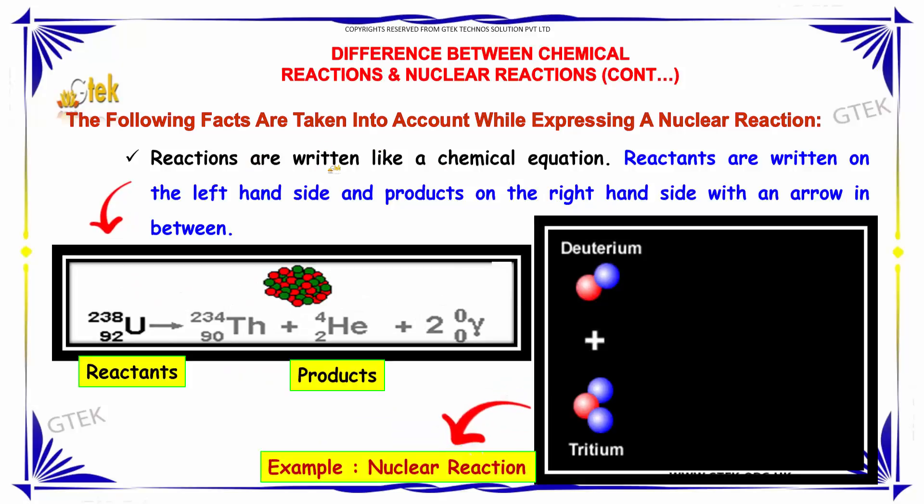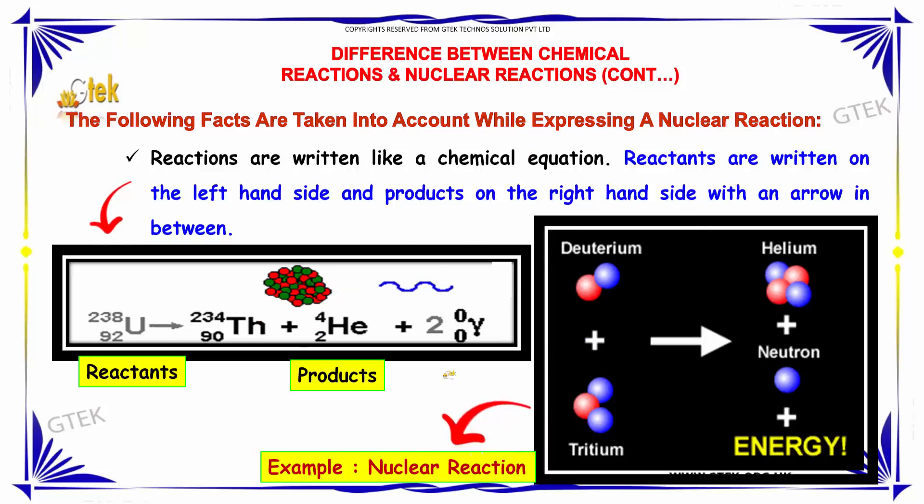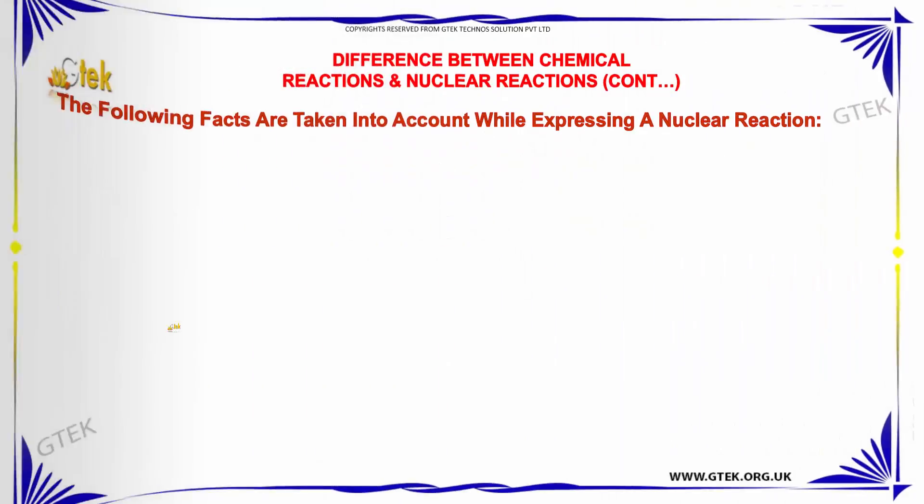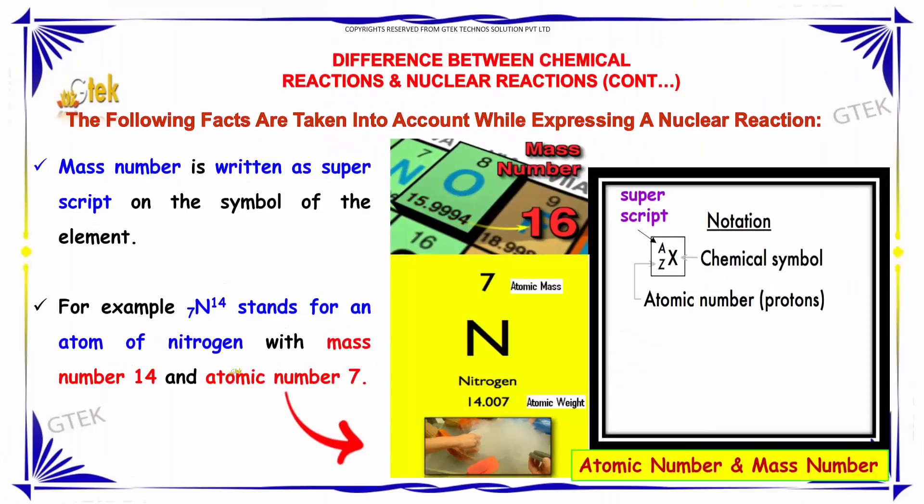The reactions are written like a chemical equation. I am trying to show you the following facts which are taken into account while expressing a nuclear reaction. The reaction should be given in the chemical equation. Reactants are written in the left side and the products should be written on the right side with an arrow between them. The mass number is written as a superscript on the symbol of the elements. For example, N14-7 stands for an atom of nitrogen with mass number 14 and atomic number 7.